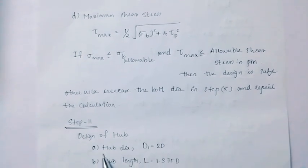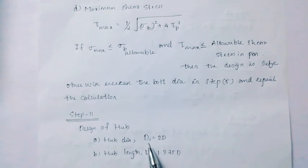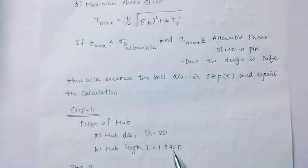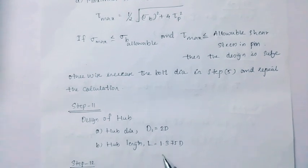Step 11: Design of hub. The hub diameter is d1 equal to 2 into d. The hub length is L equal to 1.375 d.